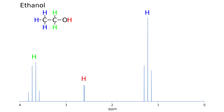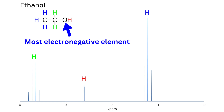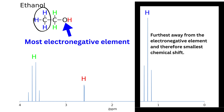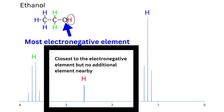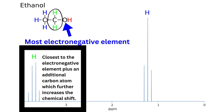The chemical shift, or location of a particular peak, will depend on how close the proton is to electronegative elements. The further away the protons are from electronegative elements, the more to the right or upfield they will be. The closer the protons are to electronegative elements, the more to the left or downfield they will be.